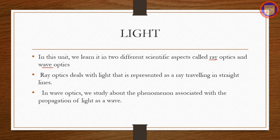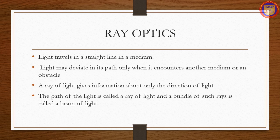In ray optics, light travels in a straight line in any medium. Light may deviate in its path only when it encounters another medium or an obstacle. A ray of light gives information about only the direction of light. The path of the light is called a ray of light, and a bundle of such rays is called a beam of light, which you all have studied in your lower classes.